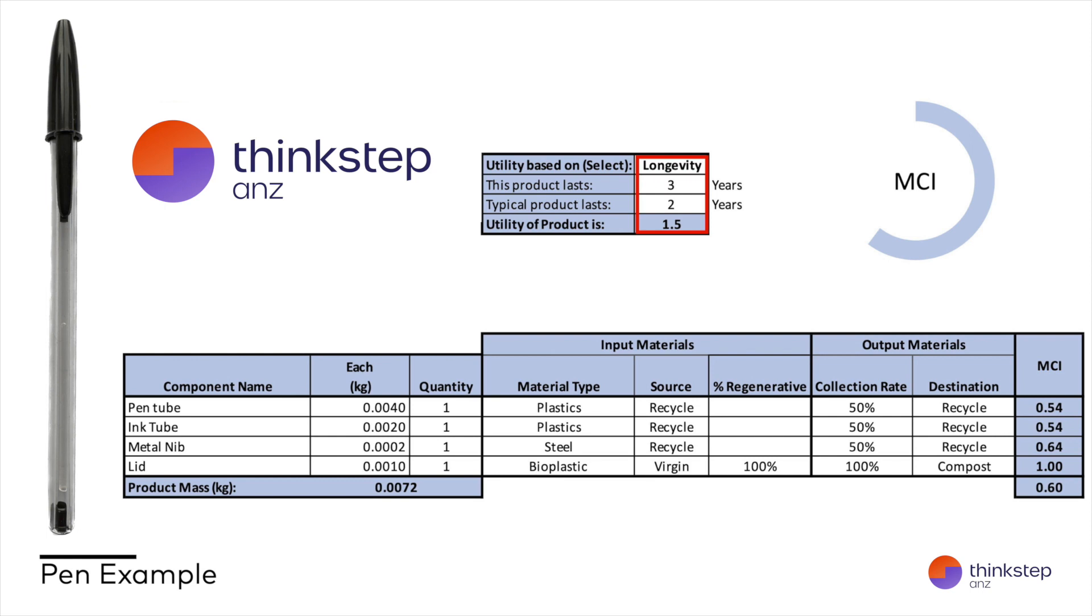Perhaps we can take things further still and have a model to refill and reuse these pens. To reflect this, we can change the destination of the output materials to reuse the pen tube, the ink tube, and the metal nib. We have, however, kept the source of the materials as being recycled grades because this is the first cycle of the product, and we don't yet have any reusable products available. Doing this on top of our other measures would bring our circularity closer to 0.7 for this life cycle of the product.